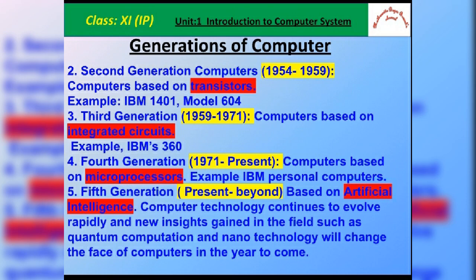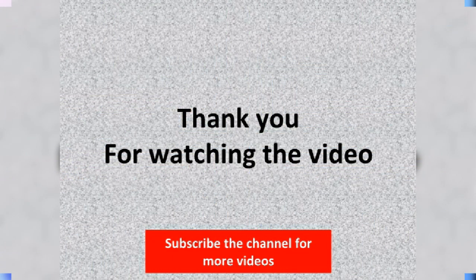The fourth generation computers are based on the microprocessor, and these are the computers we use nowadays. IBM's personal computers — the PCs — and Apple are examples of fourth generation computers. The fifth generation computers are based on artificial intelligence. Computer technology continues to evolve rapidly, and new insights in fields such as quantum computation and nanotechnology will change the face of computers in the years to come. Beyond the fifth generation, we are looking at nanotechnology and artificial intelligence.